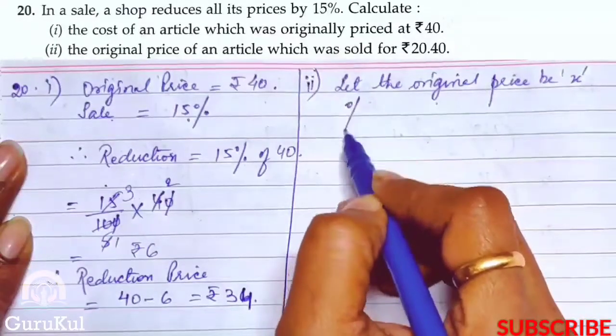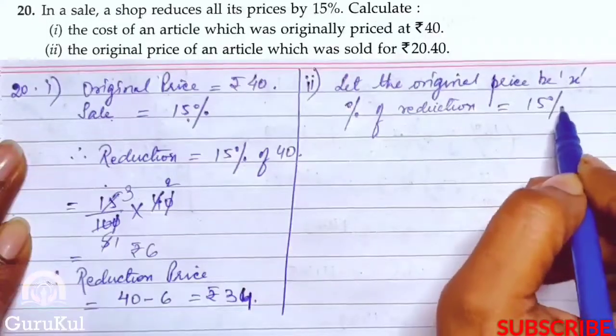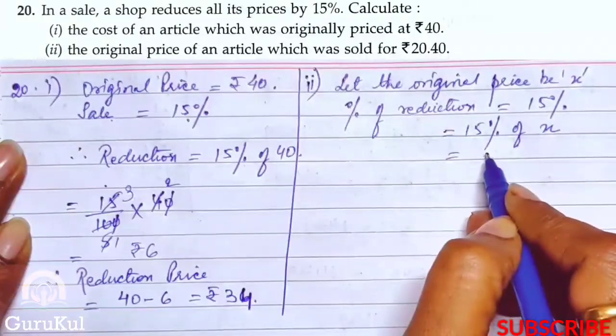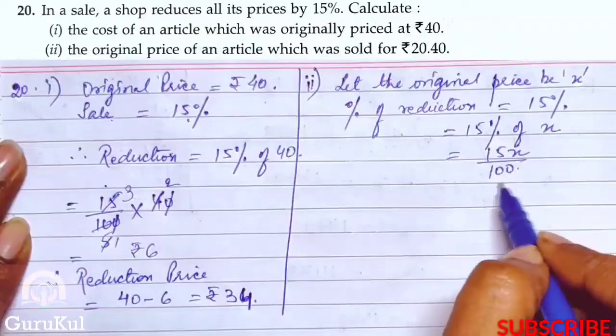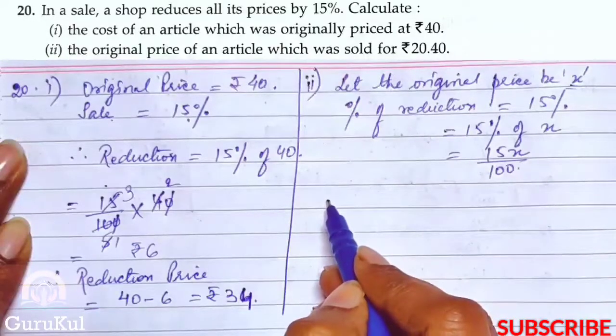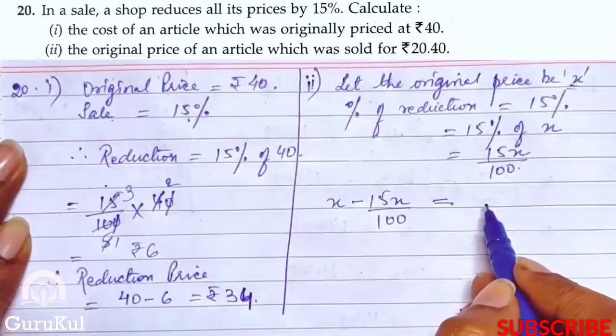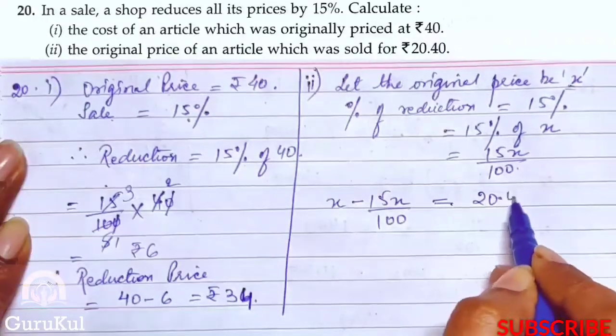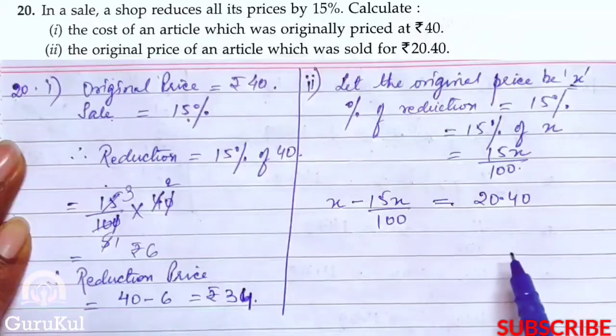Percent of reduction is equal to 15%. That is 15% of x, which is 15x by 100. After reduction, we subtract this amount from the original price. So, x minus 15x by 100 is equal to 20.40. This is the equation now which we have to solve.